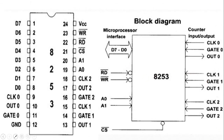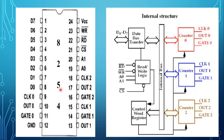This is the pin diagram of 8253, and this is the pin details of 8254. The 8254 is a 24-pin DIP IC and requires a single +5 volt power supply. The pin diagram and functional block diagram of 8254 are shown here.